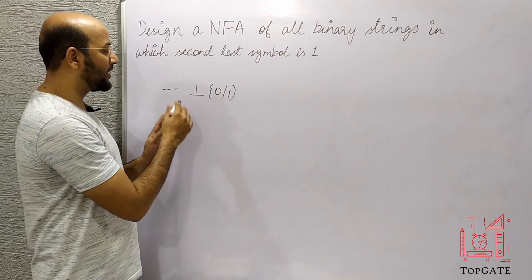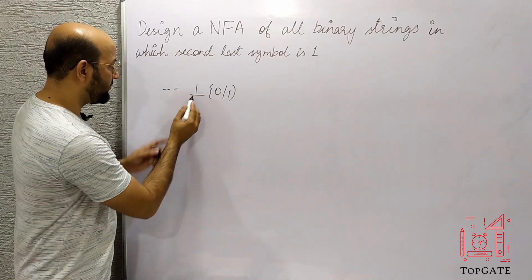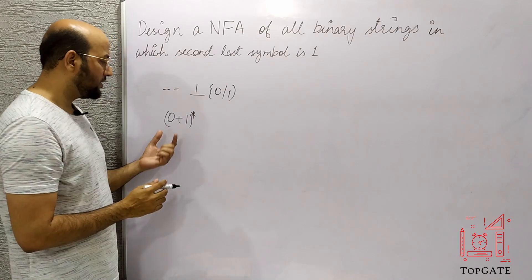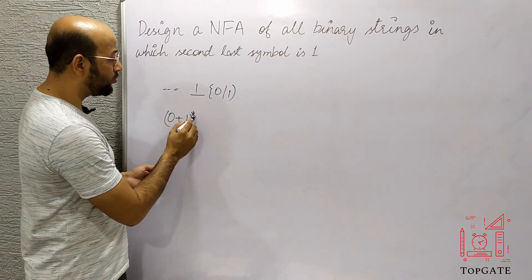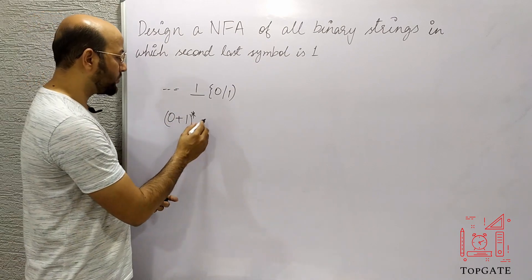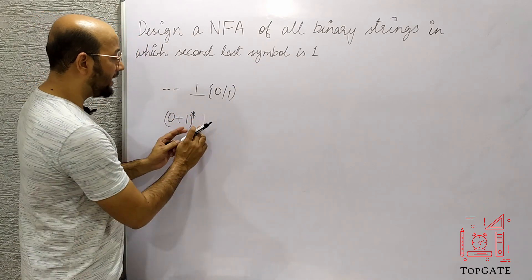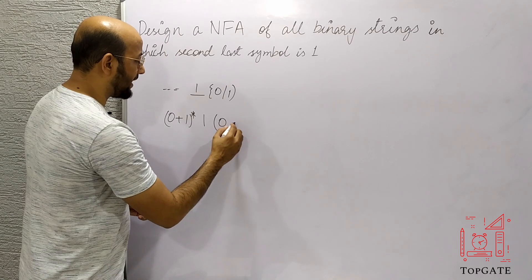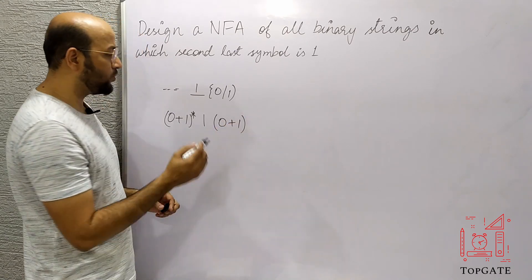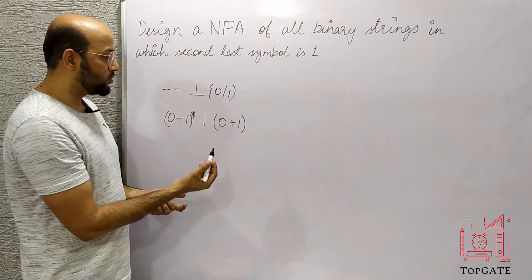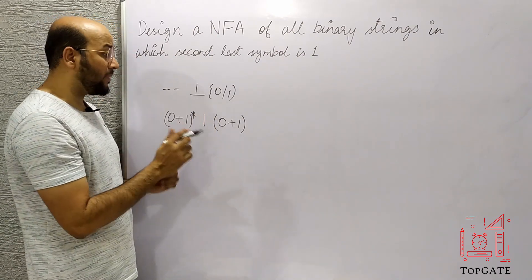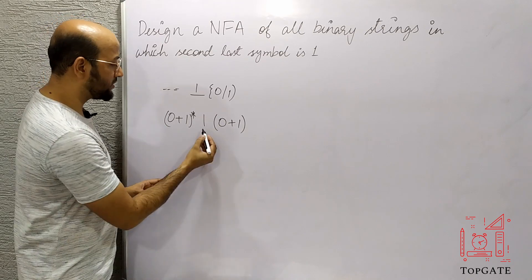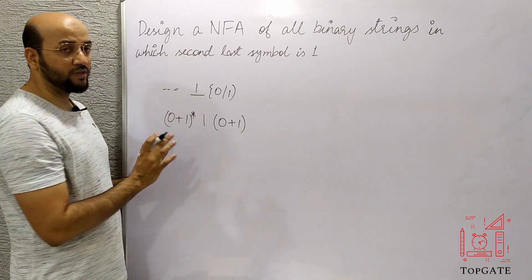To design the regular expression: before the second last symbol 1, we have any combination of 0s and 1s including null — that is (0+1)*. Then we have 1 as the second last symbol. After the second last symbol we have any single character, that is (0+1). So either 0 or 1 but exactly one character should be there. This is the second last, this is the last, and before this 1 we can have anything including null.